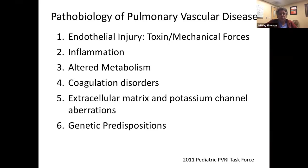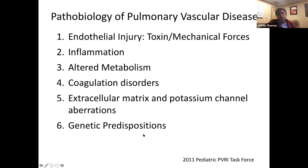Some issues related to pathobiology: this is a spectrum of disease. We say 'pulmonary hypertension' and treat it as if they're all the same, which is unfortunate — it's really a spectrum with different pathobiologies that should probably have different therapies. Known etiologies include endothelial injury from toxins and congenital heart disease, inflammation related to HIV and other infectious diseases, altered metabolism, coagulation disorders in CTEPH, and genetic predispositions — which have become really helpful in making diagnoses and guiding therapy.